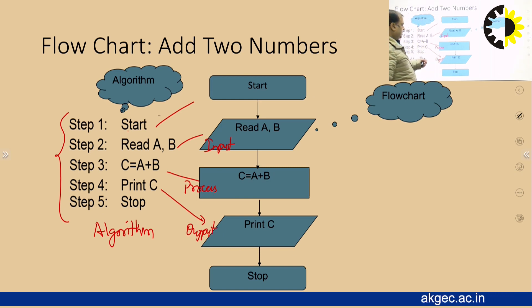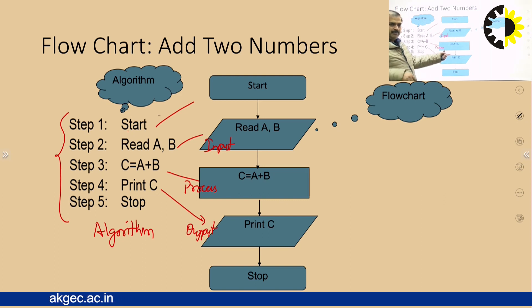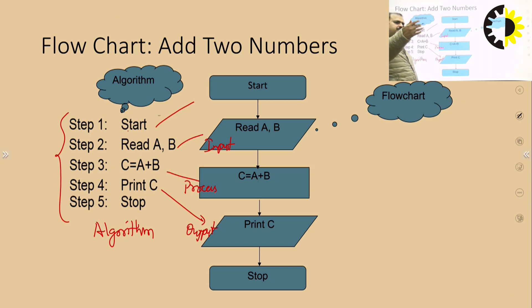The directed arrows show: from Start we go to 'Read a, b'; after reading, we add a and b and store it in c; then we move to the output step 'Print c'; and then Stop. This is how we create a flowchart for a corresponding algorithm — starting with pseudocode, refining it into an algorithm, and then converting it into a flowchart.